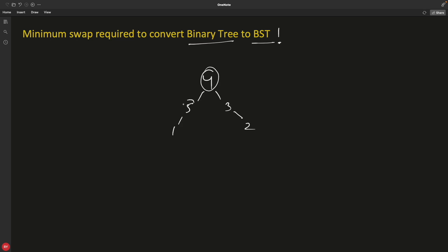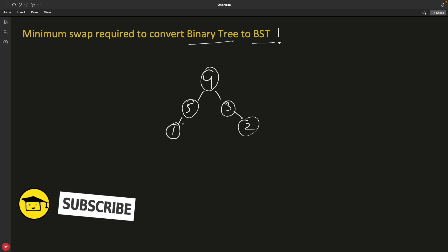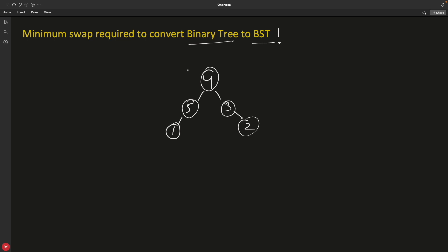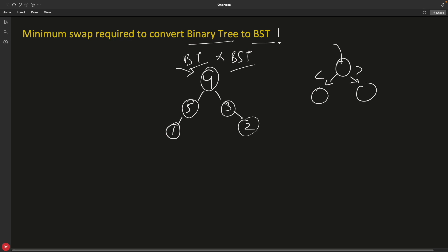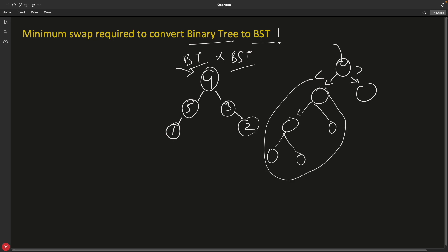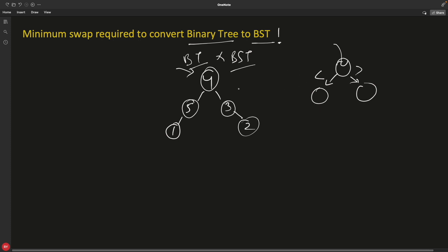Let's suppose you have this binary tree. If you ask how many swaps would be required to make it a binary search tree — because this is a binary tree but not a BST — a BST is a sorted tree. It follows a rule: if there is a node, its left child must be less than it and its right child must be greater. So all nodes in the left subtree are less than the current node. That is BST, but this tree is not.